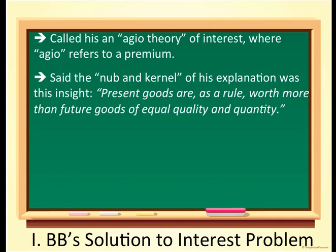He says — and this is a quote — present goods are, as a rule, worth more than future goods of equal quality and quantity. And Böhm-Bawerk said that sentence, that insight, was the, quote, nub and kernel of his explanation of interest.